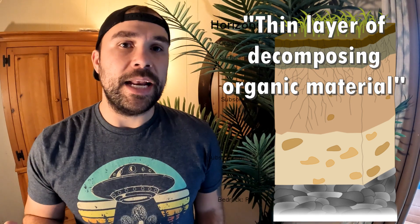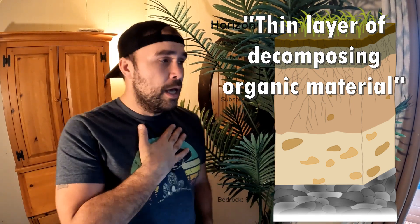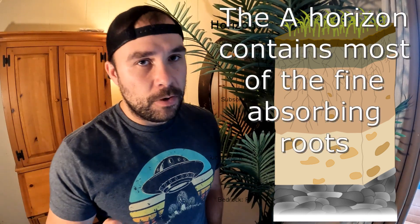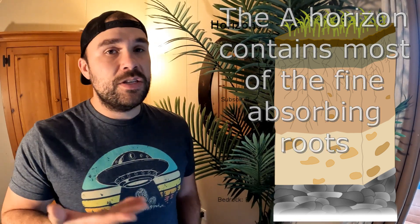O and E is your organic layer — that's like your forest floor where your decomposing leaves are. It's the area rich in organic matter. And then A is your topsoil. This is where your absorbing roots hang out and where the tree gets its most nutrition from.